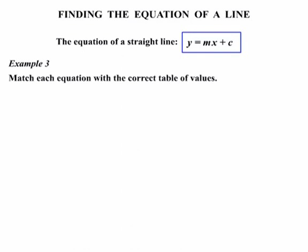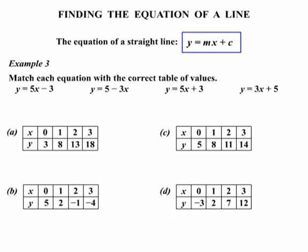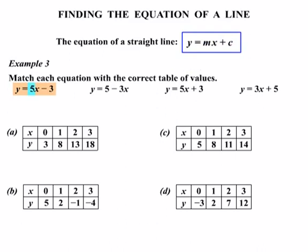Let's look at a third example. We're asked to match each equation with the correct table of values. We have four different equations and four tables of values to match up. We'll look at each equation using y equals mx plus c to work out the gradient and the y-intercept. For y equals five x minus three: the five is our gradient, and the constant term minus three is our y-intercept.